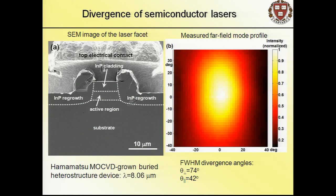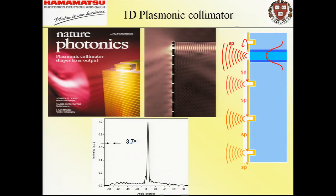This is a beautiful buried heterostructure laser from Hamamatsu. The far field is well-behaved but has typical large divergence of semiconductor lasers due to diffraction. We asked how we can use this state-of-the-art laser platform and apply plasmonics. Can we reduce beam divergence? The first attempt is a simple one-dimensional collimator to squeeze the divergence from about 60 degrees down to a few degrees.